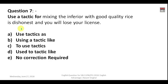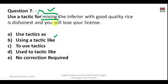Question number seven: 'Use a tactic for mixing the inferior with good quality rice is dishonest and you will lose your license.' Here 'mixing' is used as a gerund — a noun form. Since you are talking about a singular action — mixing the inferior with good quality rice — 'like' is appropriate and so is 'tactic'. The correct answer is B: 'using a tactic like mixing the inferior with good quality rice is dishonest.'